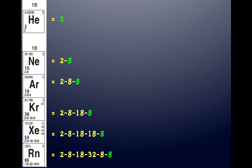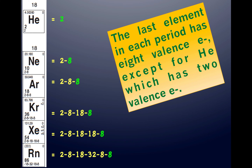The last element in each period has eight valence electrons, except for helium, which has two valence electrons. Look at neon — neon has an electron configuration of 2, 8, with eight valence electrons in the second energy level. Argon has eight valence electrons in the third energy level, and so on. The last element in each period has eight valence electrons.